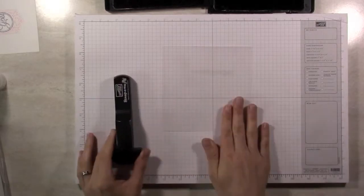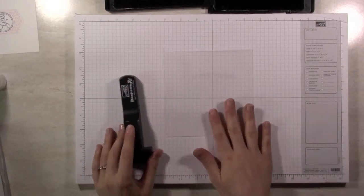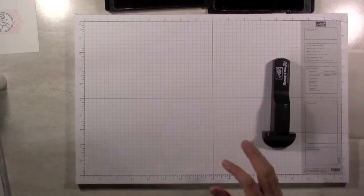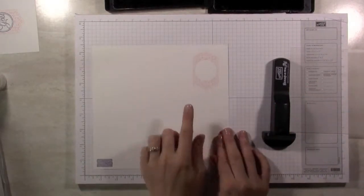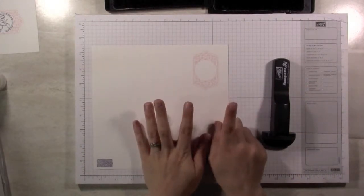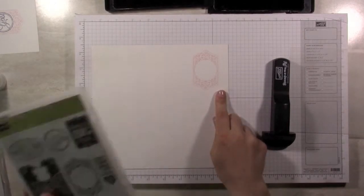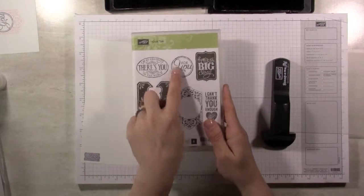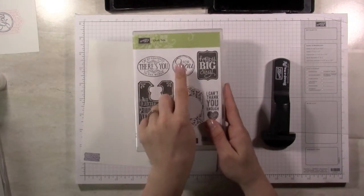So I'm going to use this corner I think today. It's just kind of my preference. Today we're going to be demonstrating using Chalk Talk. This has a great set of images to demonstrate this with. I've got this frame already stamped and now I want to put this for you inside of that frame.